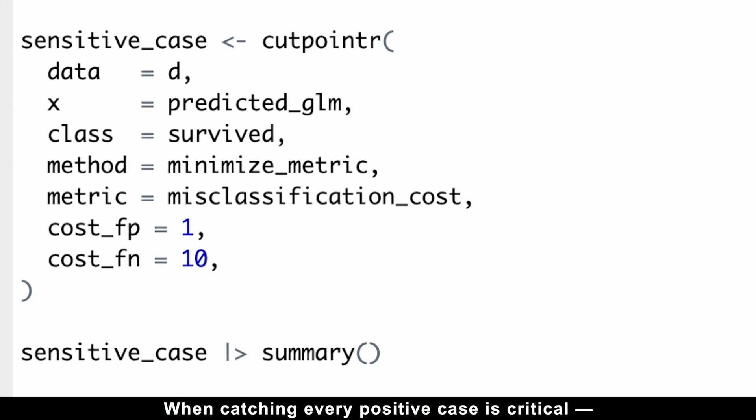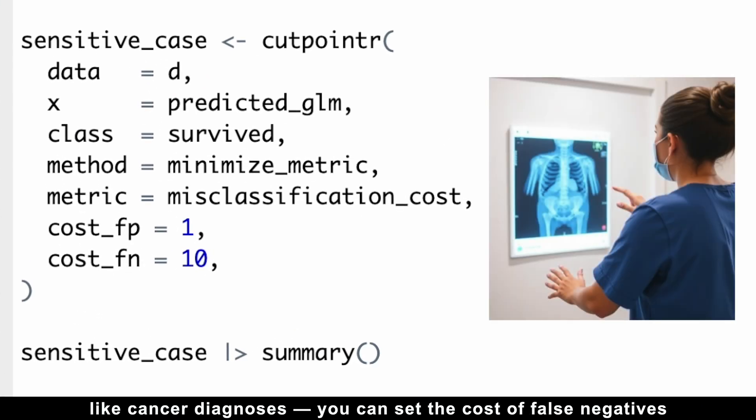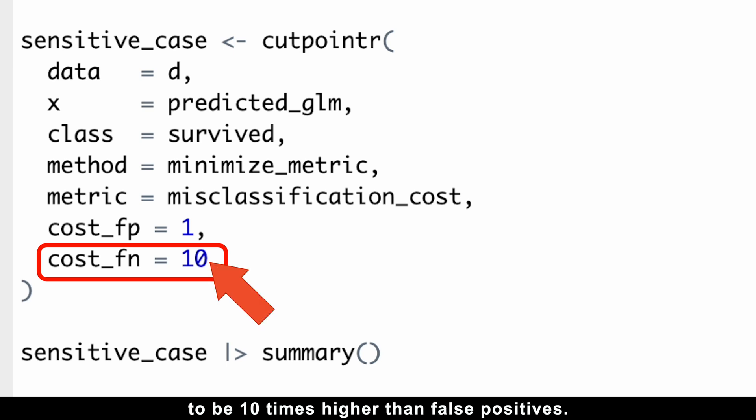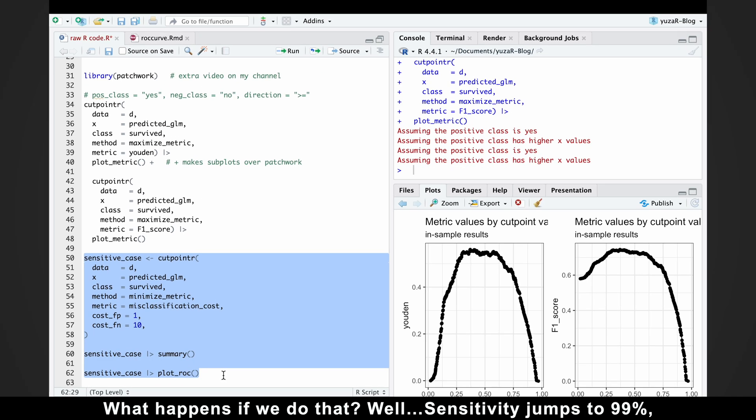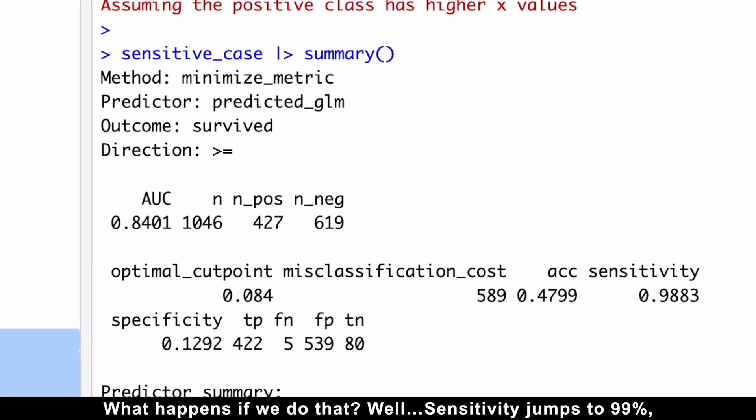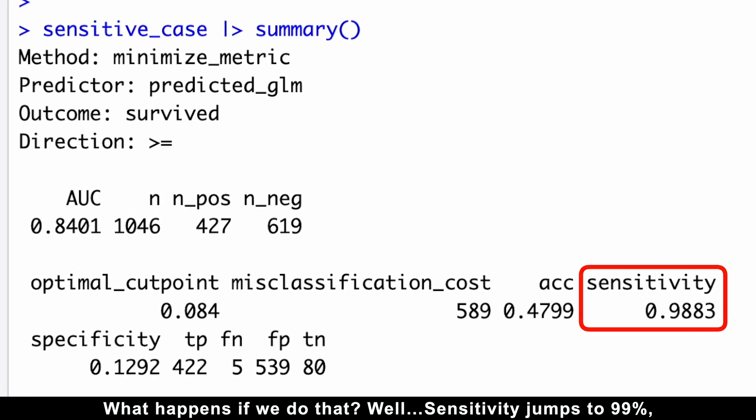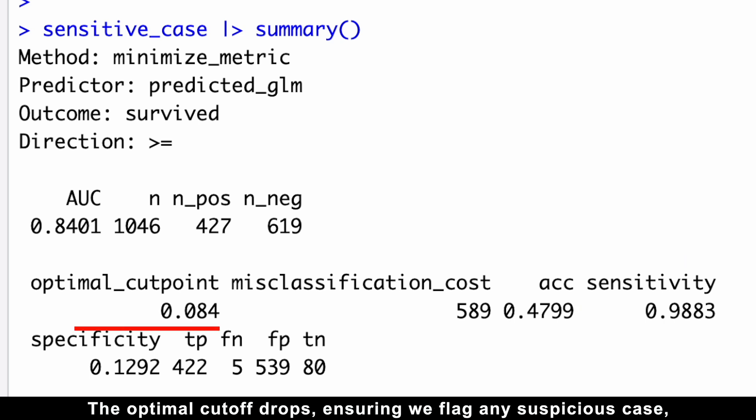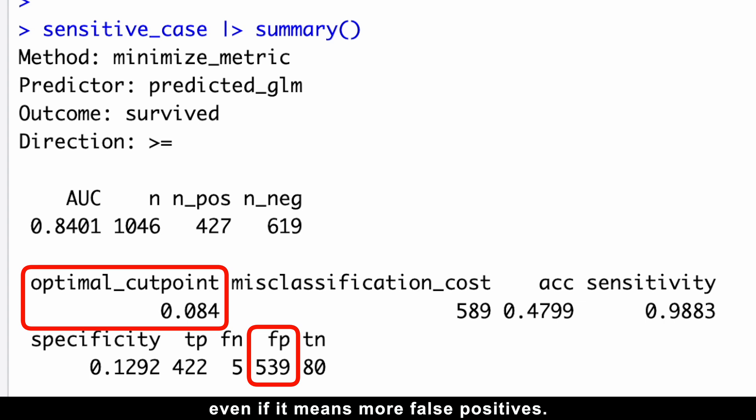When catching every positive case is critical, like cancer diagnosis, you can set the cost of false negatives to be 10 times higher than false positives. What happens if we do that? Well, sensitivity jumps to 99%, meaning 99% of cancer cases are caught early, allowing immediate treatment. The optimal cutoff drops, ensuring we flag any suspicious case, even if it means more false positives.